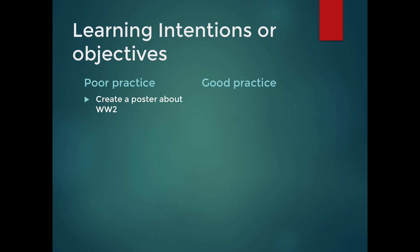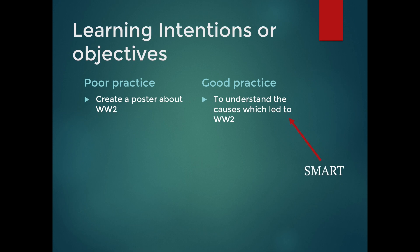A first example: I once observed a history lesson and saw this as an objective — to create a poster about World War 2. I'm sure that was a fun and enjoyable exercise for the students, but that's a task-based objective. It does not make the learning explicit. What would be better is something more rigorous, such as: to understand the causes which led to World War 2. This is what we call a SMART objective — it's specific, it's measurable, it's achievable, it's relevant, and it's time-centered.